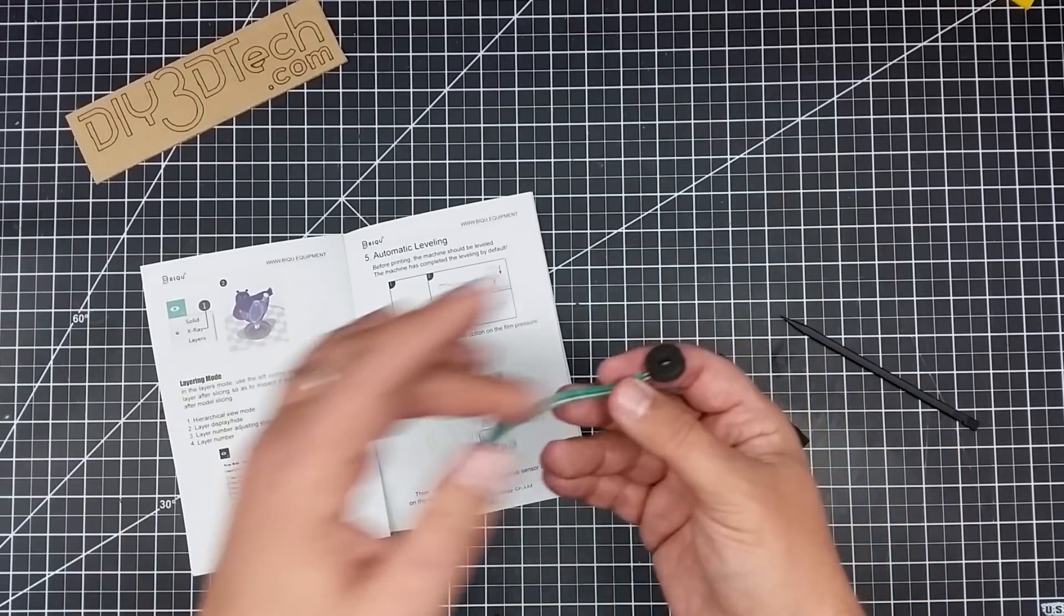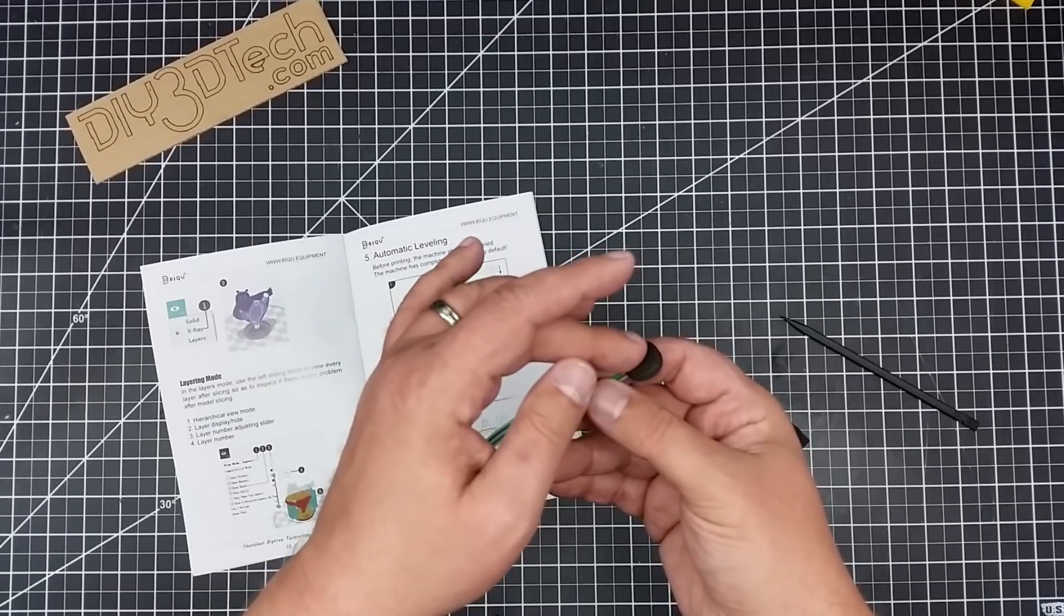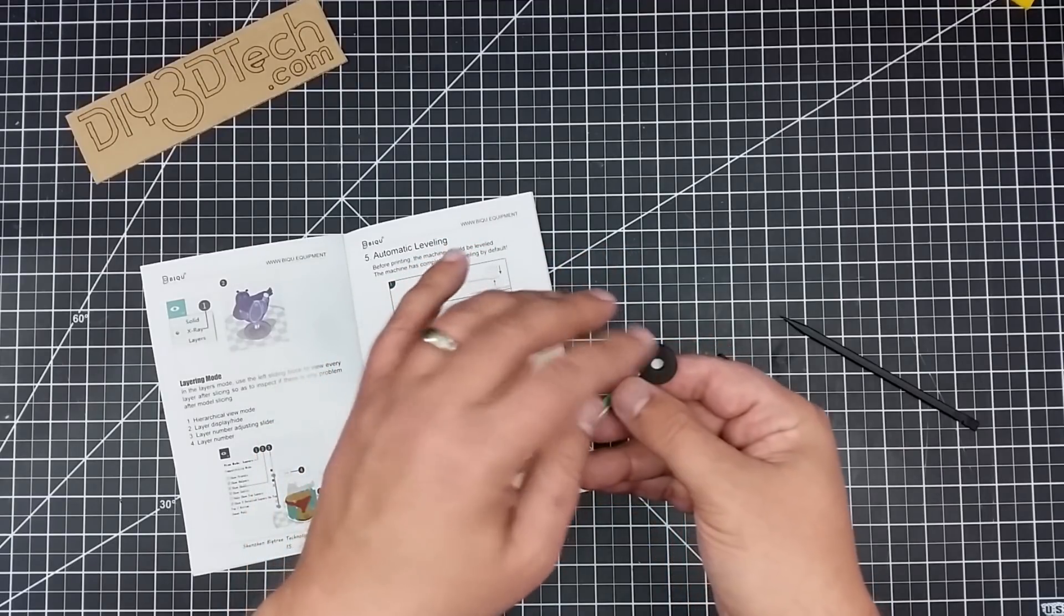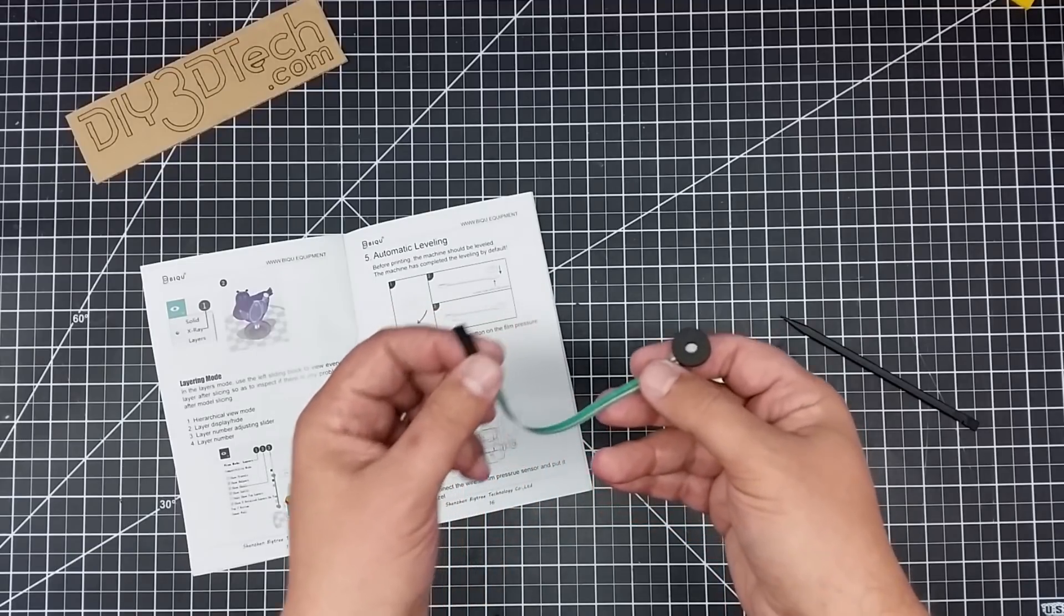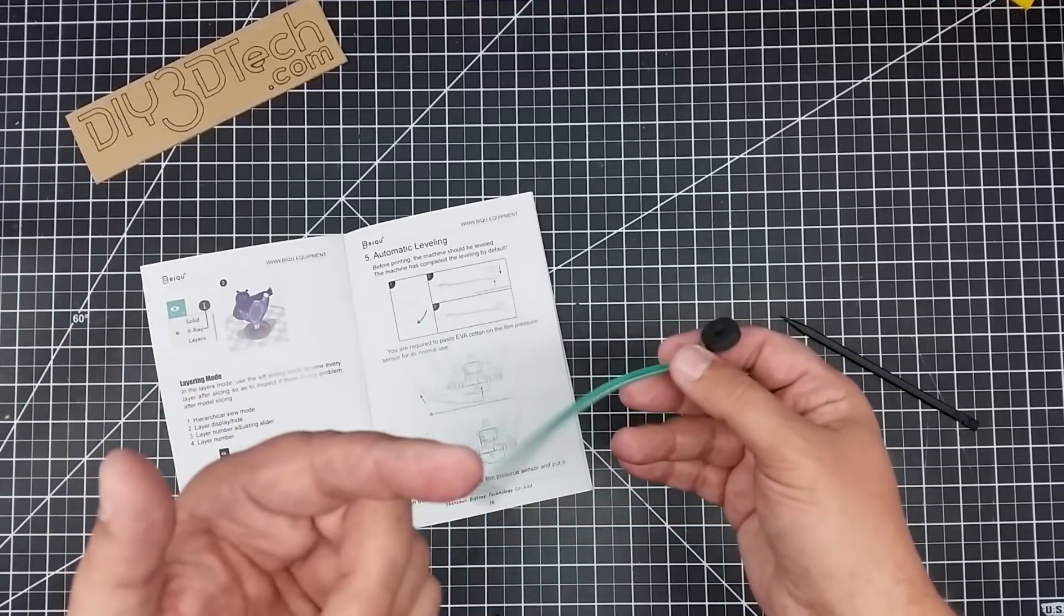Now the general idea is again this is held in place by the hot end itself, the nozzle, and this connects to the two pin connector that's on the hot end. So tell you what, let's head over to the printer, let's set it up and see how it all works.